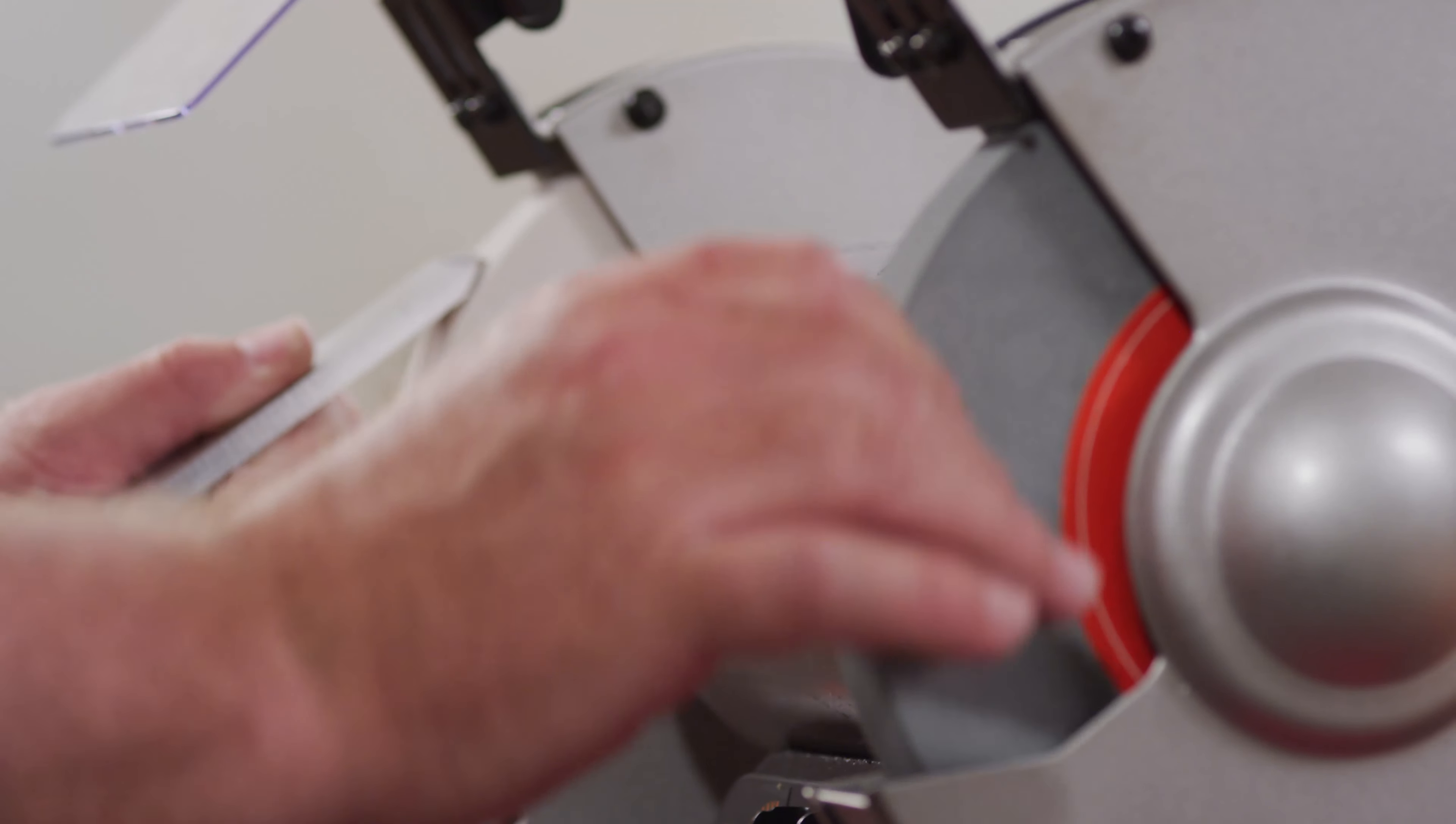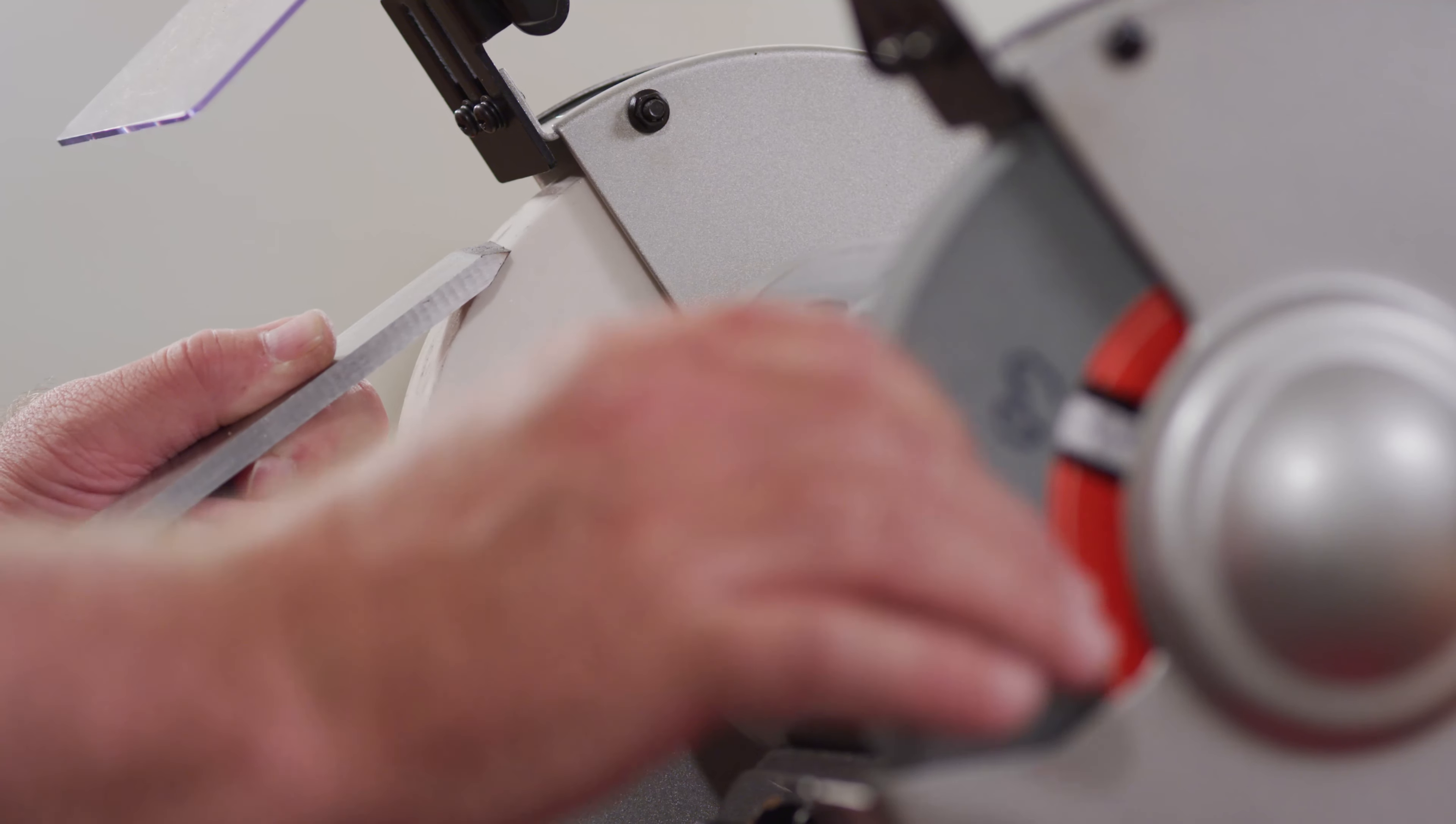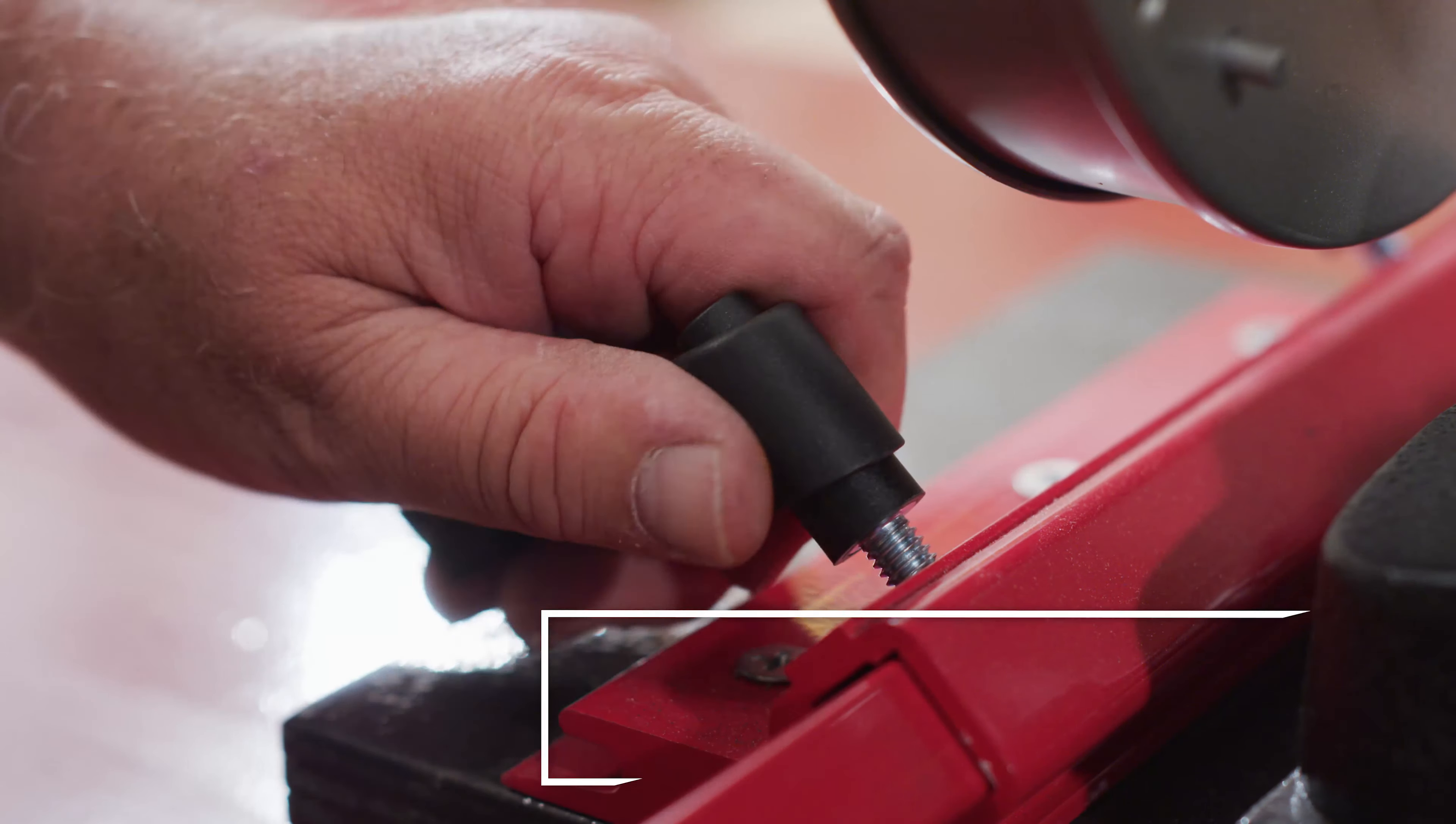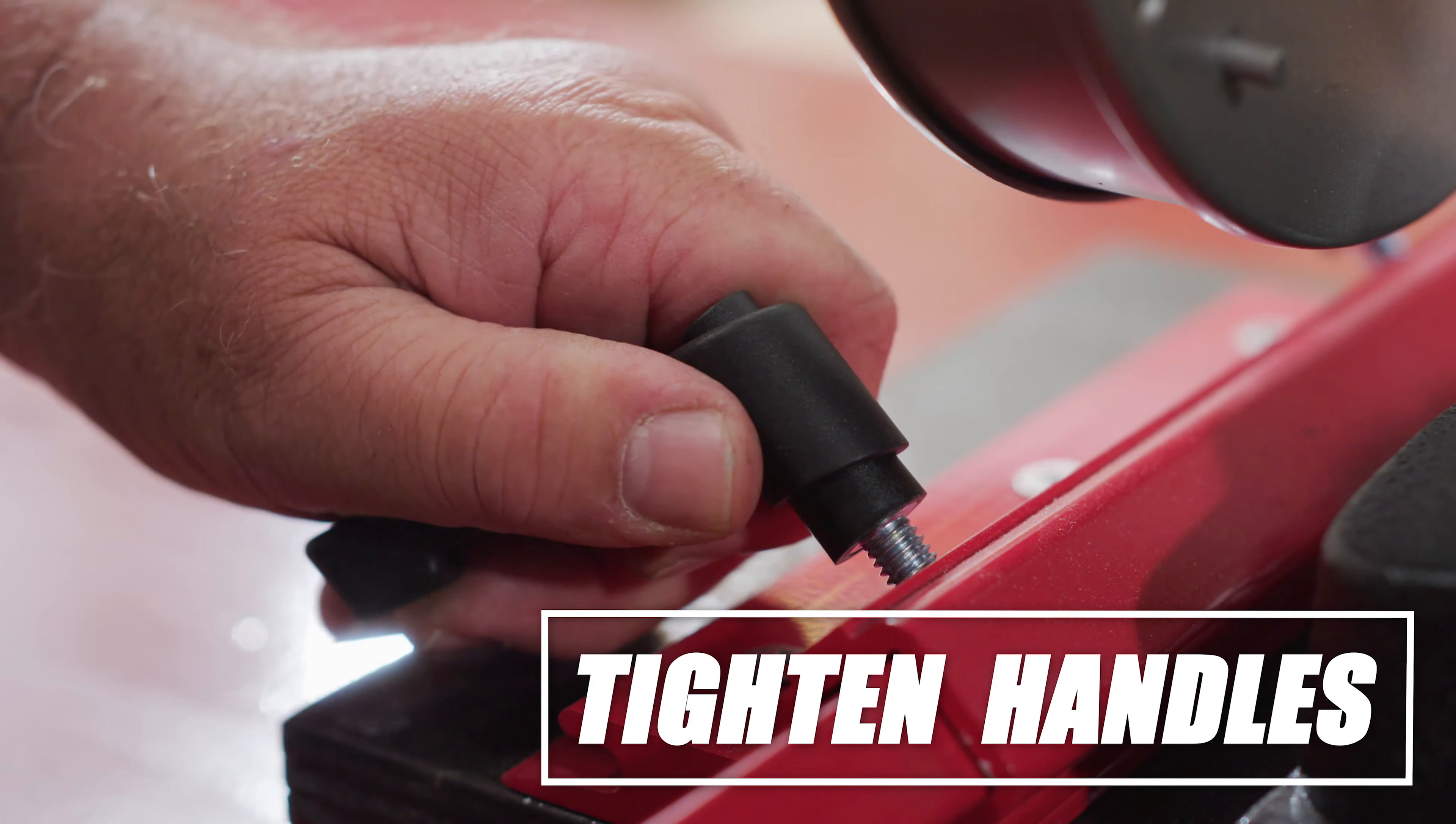Rotate the wheel slowly by hand and view the skew and grinding wheel from the side to ensure the two surfaces are perfectly flush. Once correctly positioned, tighten the positioning handles.